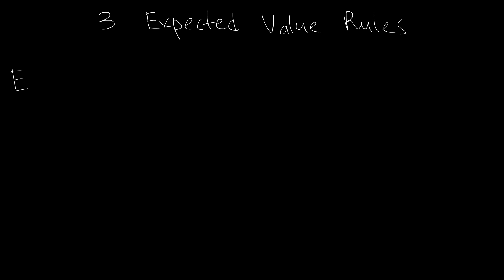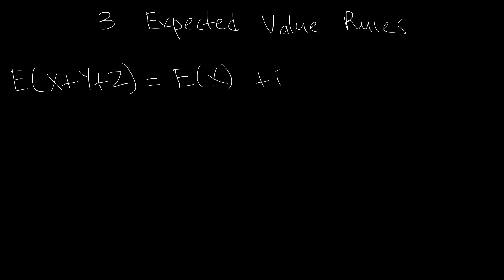The first rule says that the expected value of the sum of several random variables is equal to the sum of their expected values. Here we have three random variables X, Y, and Z.